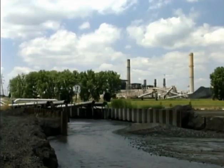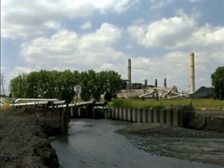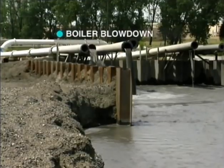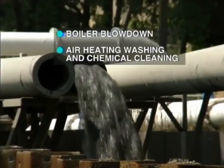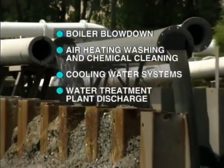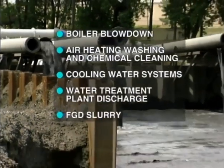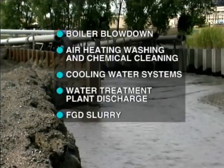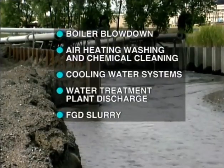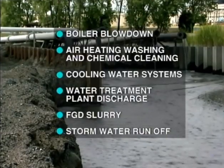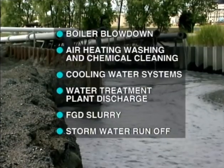Let's continue our study of power plant pollutants by looking at effluent discharges from the plant. The sources of effluent contaminants are boiler blowdown, air heater washing and chemical cleaning, cooling water systems, water treatment plant discharge, FGD slurry — that is waste effluent from a flue gas desulfurization installation — storm water runoff from coal piles, ash ponds, oil tanks, and other possibly contaminated areas.